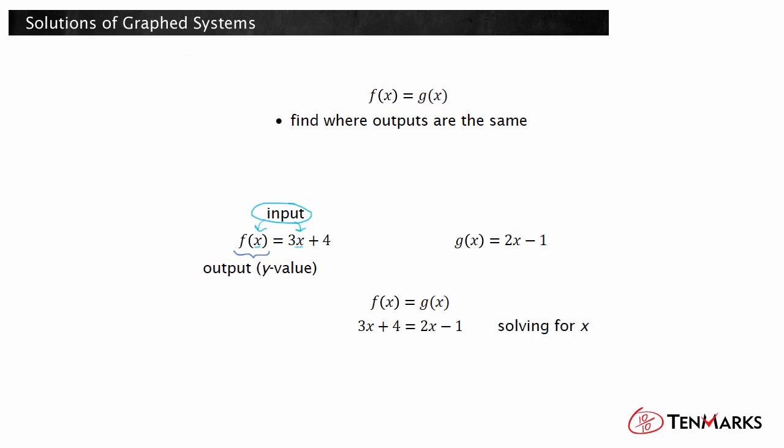Solve the resulting equation for the values of x at which the functions are equal. So, when solving the equation f of x equals g of x, you are looking for x values for which the outputs of the functions are the same. This will occur at solutions to the system of equations. On a graph, the solutions to f of x equals g of x are represented as the x values at the point or points of intersection of the graphs of the functions.